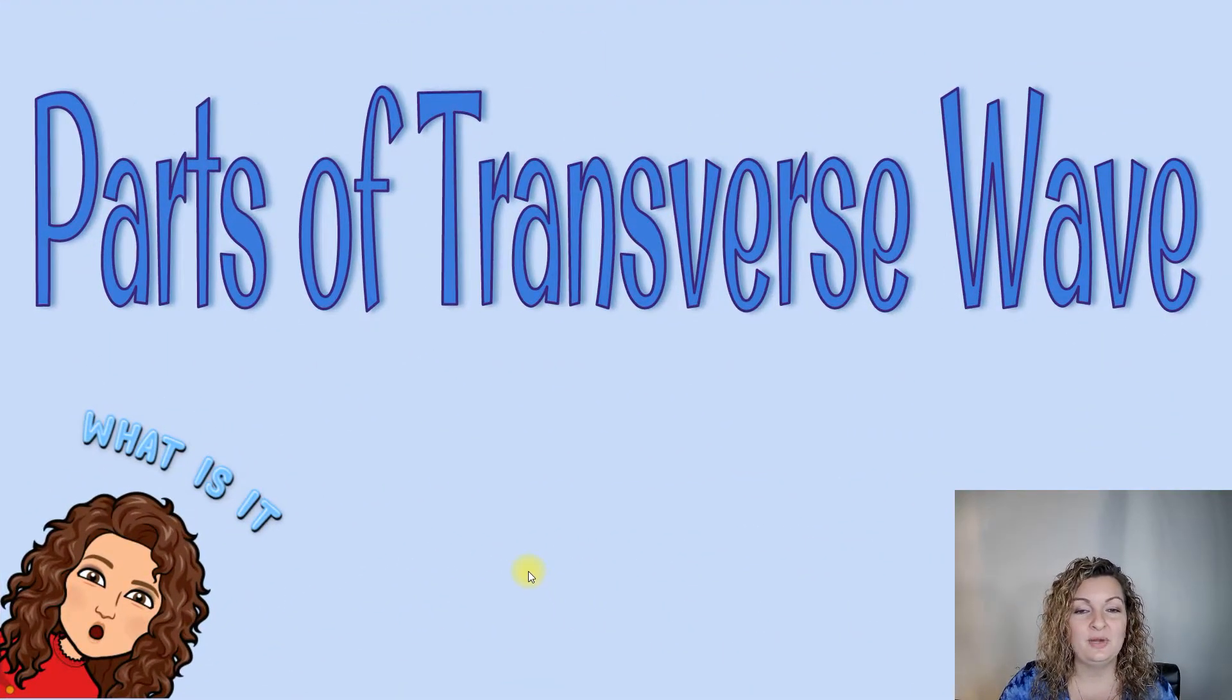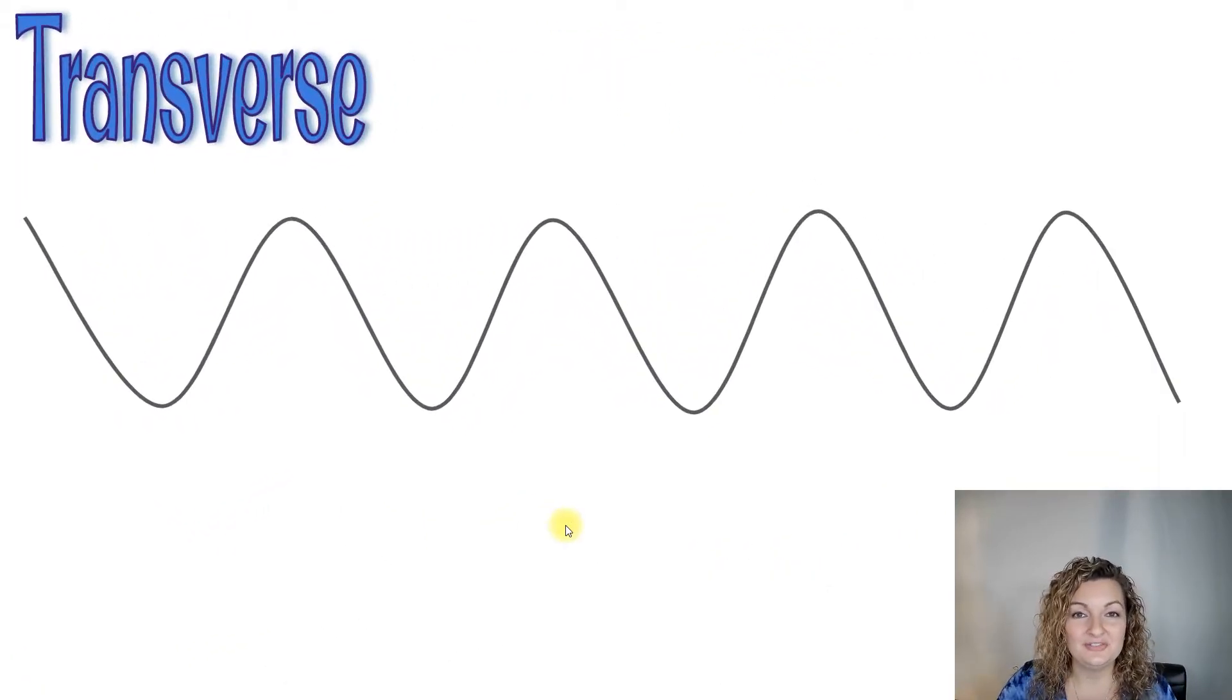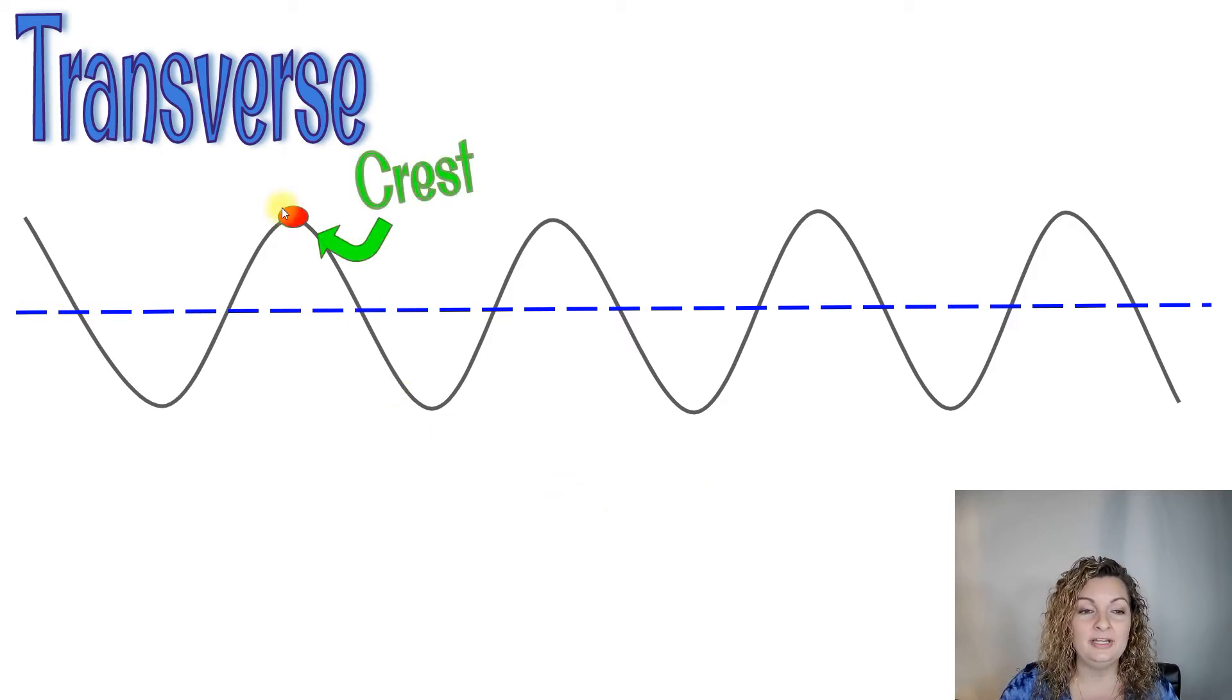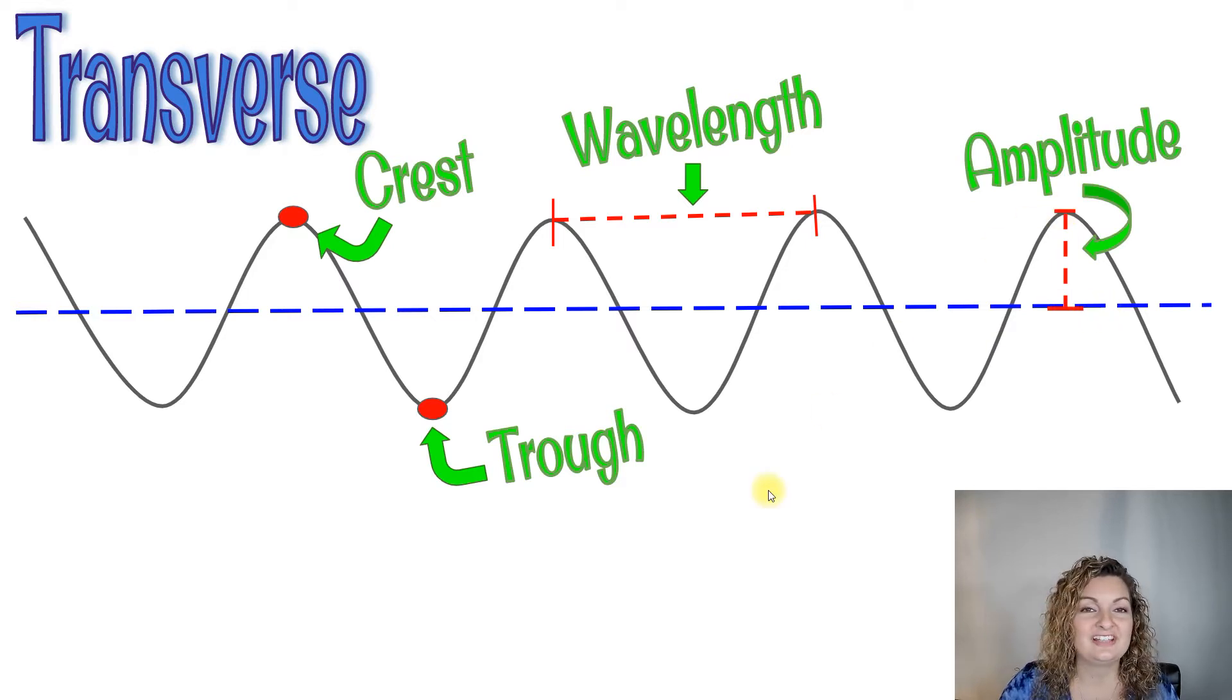So our first one is parts of a transverse wave. So here's our blue screen. Go ahead and pause it and then you can wait for the answer in a second. So here's a transverse wave. We're always going to start with our origin in the middle or we can call this rest where there's no disturbance and then you can see that our top point is going to be our crest. Our bottom point is going to be our trough. We do have a wavelength going from crest to crest and then we have our amplitude from rest to crest. We can also measure amplitude from rest to trough as well.